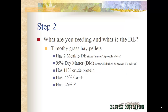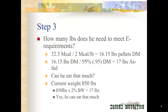What are we going to be feeding, and what is the digestible energy in it? For this I have chosen Timothy grass hay pellets, which has 2 Mcal per pound of digestible energy — this coming from appendix table 6 under grasses. It has 95% dry matter, and I went with the highest percentage because it is a pelleted feed, which means it's more dehydrated than straight hay. It has 11% crude protein, 0.45% calcium, and 0.26% phosphorus.